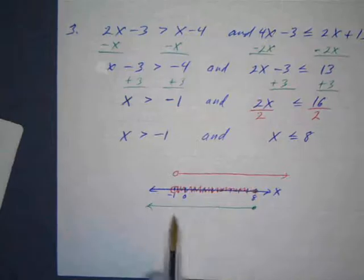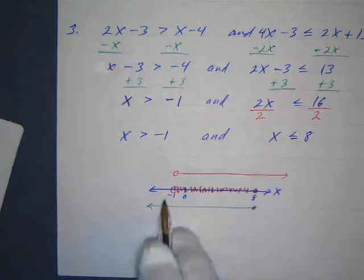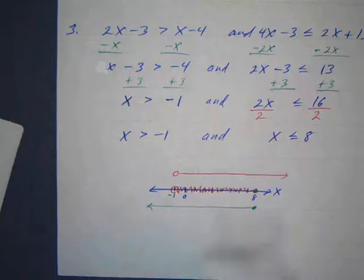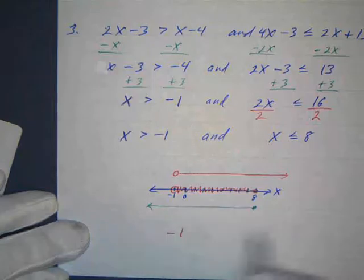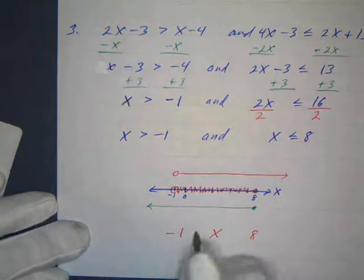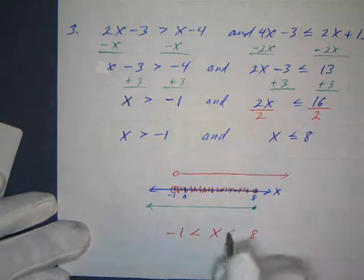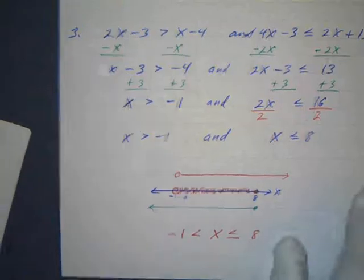That shaded region represents all numbers greater than negative 1 and less than or equal to 8 — essentially the numbers between negative 1 and 8. You can abbreviate this conjunction as: negative 1 < x ≤ 8. Note that you can abbreviate a conjunction this way, but you cannot abbreviate a disjunction.